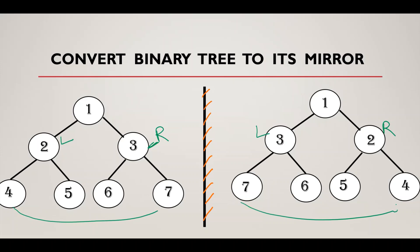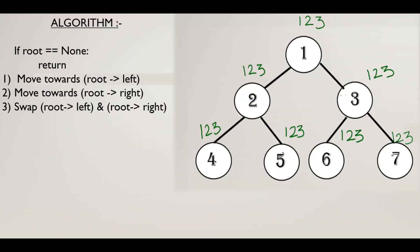Now let's understand how we can convert this binary tree to its mirror image. Let's understand this with the help of an algorithm. First of all, if our root is equal to none, that means we will not have any root or any node, then it will return automatically. Else, when our root is not equal to none, it will move firstly to the left, then to the right, and then it will swap. We will understand this on the binary tree.